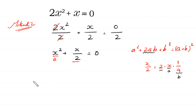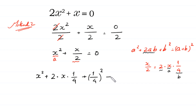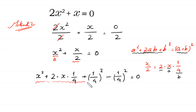We complete the square: x squared plus 2 times x times 1 over 4. To complete the square, we add the square of the term 1 over 4 — that is, 1 over 4 squared — and we subtract this same 1 over 4 squared, all equal to 0. So x squared plus 2 times x times 1 over 4 plus 1 over 4 squared equals x plus 1 over 4 whole squared, and 1 over 4 squared equals 1 over 16.